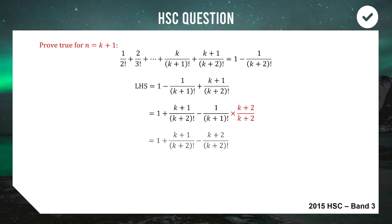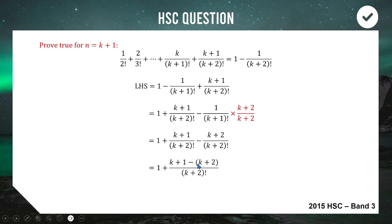Now both fractions have denominator (k+2)!. We combine them: (k+1) − (k+2) on the numerator gives k − k = 0 and 1 − 2 = −1, so the numerator is −1. We put the negative out front and get −1/((k+2)!), which means the full expression is 1 − 1/((k+2)!) — exactly the right-hand side as required.